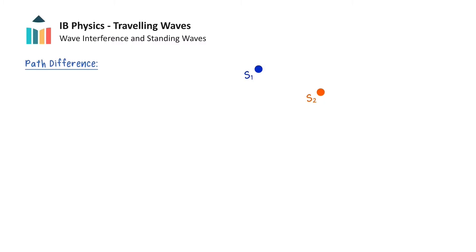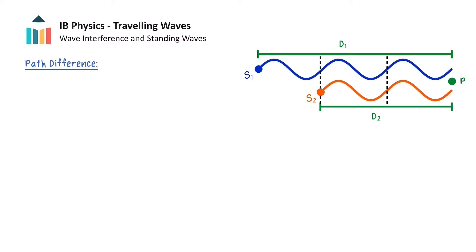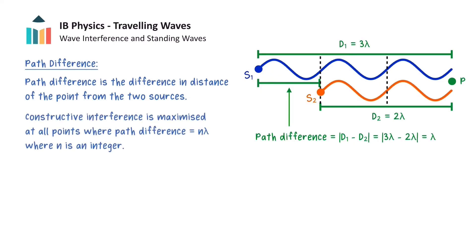We will now discuss the concept of path difference and how it can result in a phase difference between two waves. Let's consider two identical sources which emit waves of wavelength lambda that are in phase, and focus on point P. Point P is at distance d1 from source 1 and distance d2 from source 2. In this case, d1 is equal to 3 wavelengths and d2 is equal to 2 wavelengths. Path difference is the difference in distance of the point in consideration from the two sources. For point P, the path difference equals d1 minus d2, which has a value of one wavelength. Notice how the waves are in phase when they meet at point P. So a path difference of lambda results in constructive interference. In general, constructive interference is maximised at all points where the path difference is equal to an integer multiplied by the wavelength.